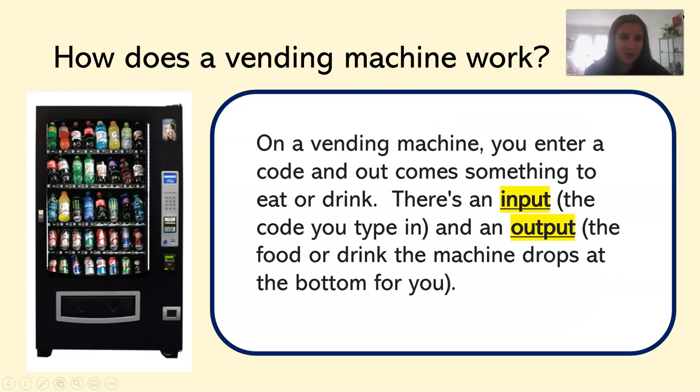So we can start by thinking about vending machines. On a vending machine you enter a code off to the side here and something comes out to eat or drink. There's an input so you type in the code like A1 or C4 and then an output comes out the bottom which is your food or your drink, your snack. So the input is the code you put in, the output is the snack.